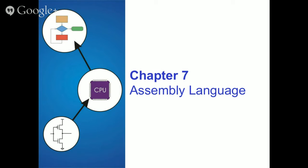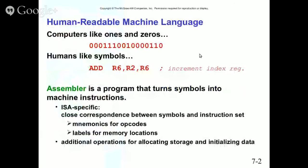This is displaying what human-readable machine language is. Computers compute and read items as zeros and ones — you see things like 0001111. As humans, we look at symbols: letters and numbers. There are various assemblers, and the one we're going to use is the NASM assembler. We'll be downloading and using it on our Linux machines. An assembler is a program that turns symbols into machine instructions.